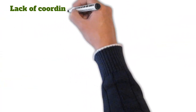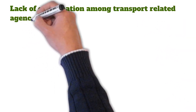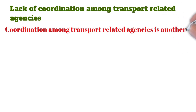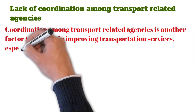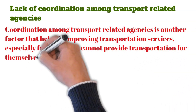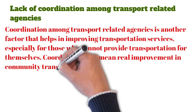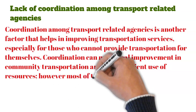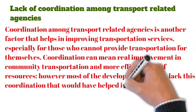Lack of coordination among transport-related agencies is another factor. Coordination among transport-related agencies helps improve transportation services, especially for those who cannot provide transportation for themselves. Coordination can bring real improvements in community transportation and more efficient use of resources. However, most developing countries lack this coordination that would help improve transport.